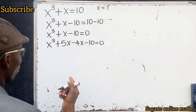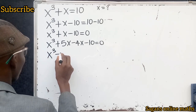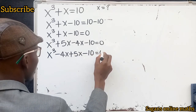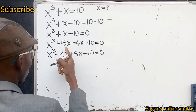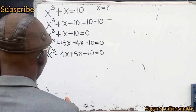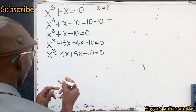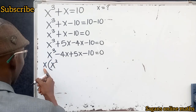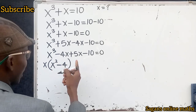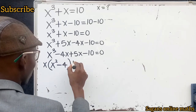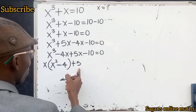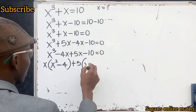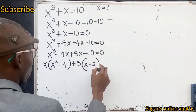We can also write this as x to the power of 3 minus 4x plus 5x minus 10, all equals 0. Because 5x minus 4x is the same as x. Now between x³ and minus 4x, x is common. So x is factored out giving x squared minus 4. Between 5x and minus 10, 5 is common, giving 5 into x minus 2. All equals 0.